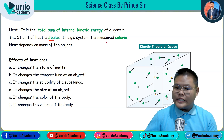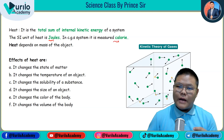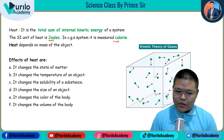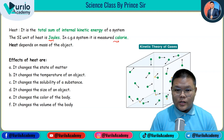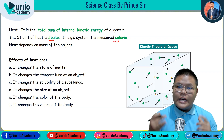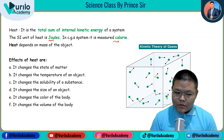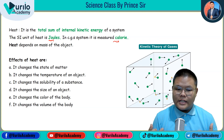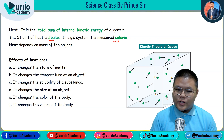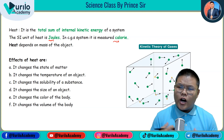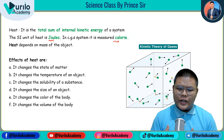In the CGS system we measure heat in calories. The device used to measure heat is called a calorimeter — remember that. Heat depends on the mass of the object. Now let's look at the effects of heat.